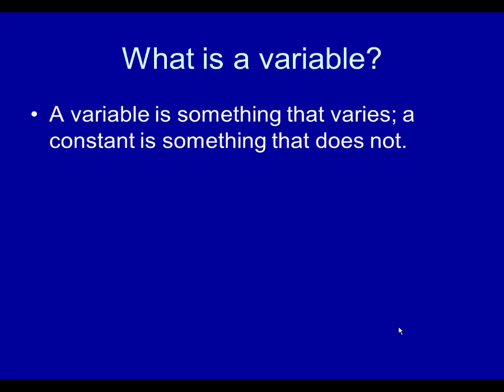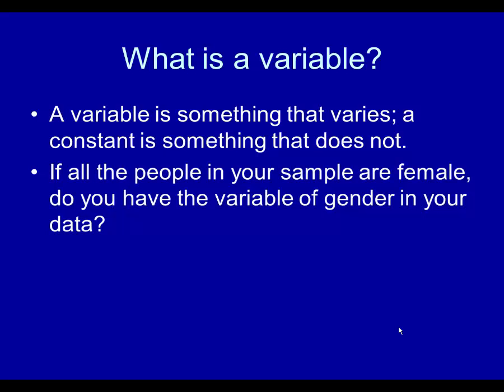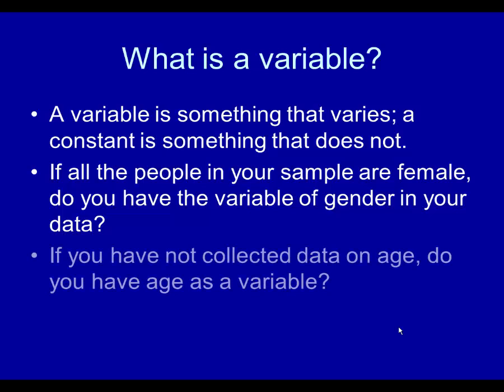A major and very basic question is: what is a variable? A variable is something that varies. A constant is something that does not. If all the people in your sample are female, do you have the variable of gender in your data? Everyone is a female — can you say you are measuring gender as a variable? No, because gender does not vary. How about this: if you have not collected data on age, do you have age as a variable? Of course not. These things are simple and basic, but as a human service professional or student it's very easy to make that kind of mistake.